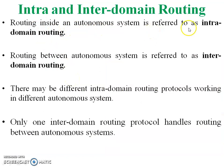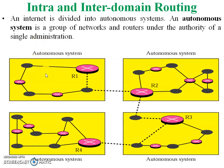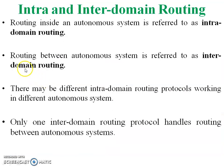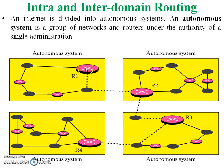Routing inside an autonomous system is referred to as intra domain routing. If any protocol is working inside this yellow block, it is an intra domain routing protocol, meaning it is RIP or OSPF as per the classification. Routing between autonomous systems is referred to as inter domain routing. Two autonomous systems are connected with each other with the help of an inter domain routing protocol like BGP.